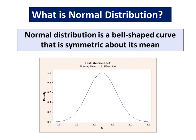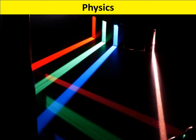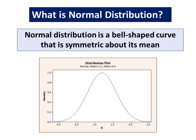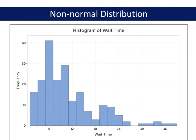What is normal distribution? Normal distribution is a bell-shaped curve that is symmetric about its mean. The normal distribution is the most common statistical distribution because approximate normality arises naturally in many physical, biological, and social measurement situations. Many statistical analyses require that the data come from normally distributed populations. The normal distribution is also known as the Gaussian distribution.